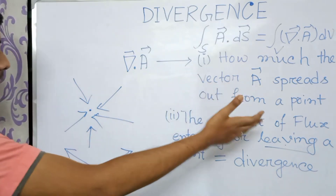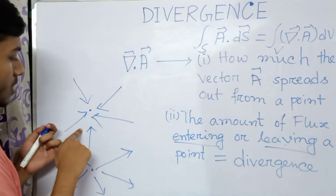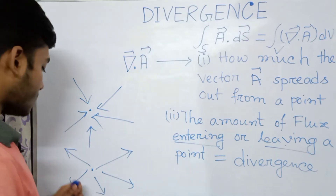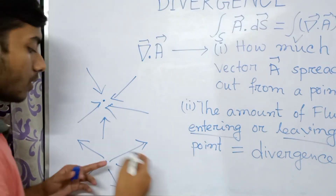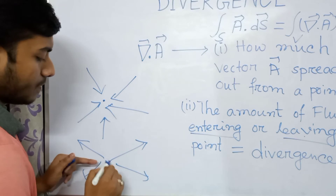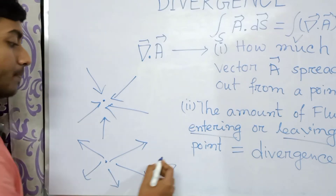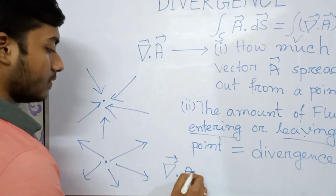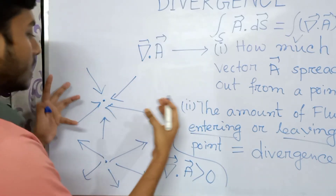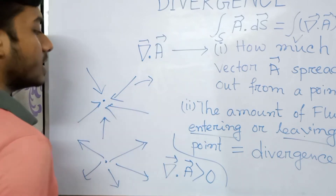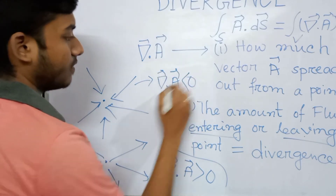Before going further, we need to understand an important thing. When the vectors are spreading outside from a point, we call that point one that possesses a positive divergence — that is, divergence of A is greater than 0. And in the case where the field vectors are converging into a point, the divergence is negative — that is, del dot A is less than 0.